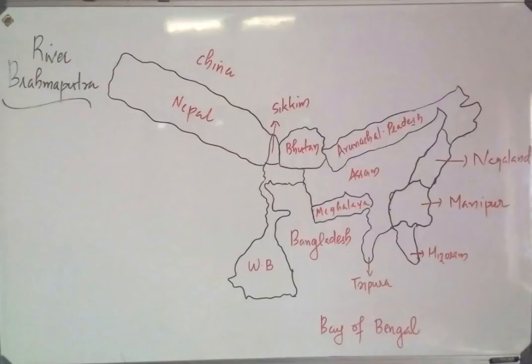The Brahmaputra flows through Bangladesh. The countries it covers are Nepal, Bhutan, and Bangladesh. The Indian states it flows through are Sikkim, West Bengal, Arunachal Pradesh, Assam, Meghalaya, Tripura, Mizoram, Manipur, and Nagaland.